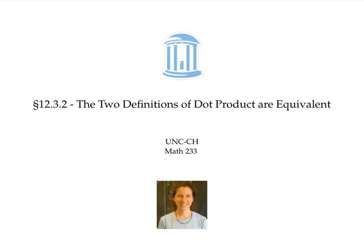We've seen that there are two possible definitions for the dot product of two vectors. The first definition is in terms of components. So if V and W are two vectors with the following components, then the dot product V dot W is obtained by multiplying corresponding components and adding them up.